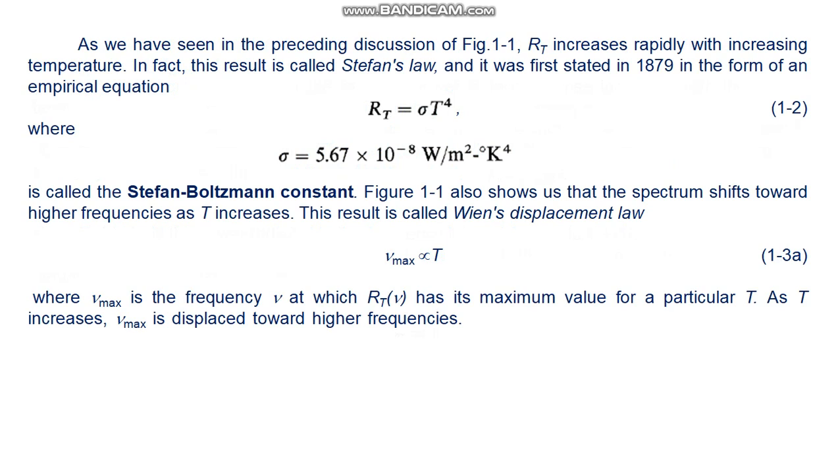As we have seen in the preceding discussion of figure 1.1, R_T increases rapidly with increasing temperature. In fact, this result is called Stefan's law, and it was first stated in 1879 in the form of the empirical equation R_T = σT^4, where σ = 5.67 × 10^-8 watt/(meter² · Kelvin^4). It is called the Stefan-Boltzmann constant.